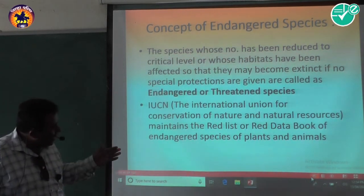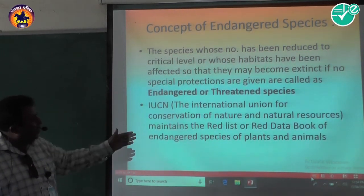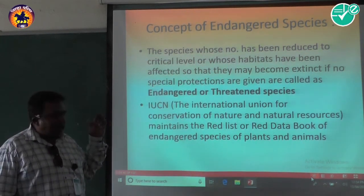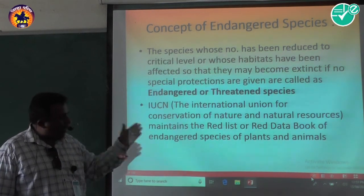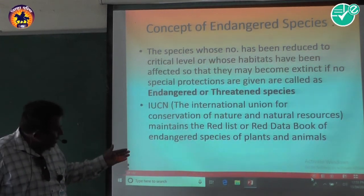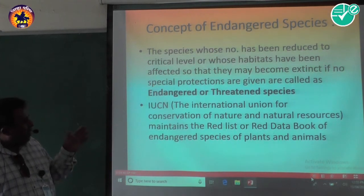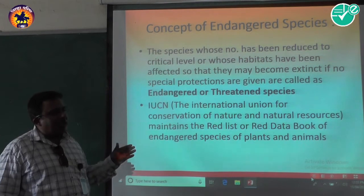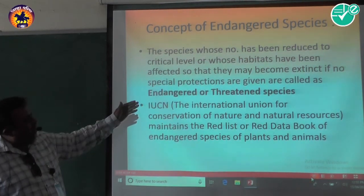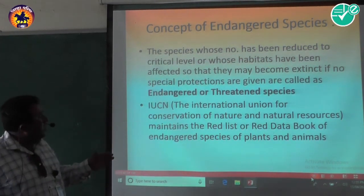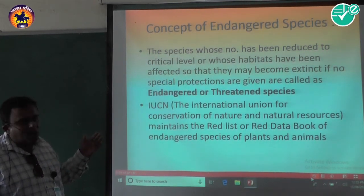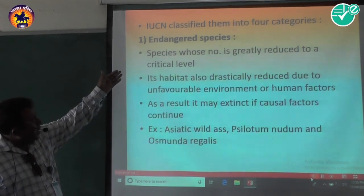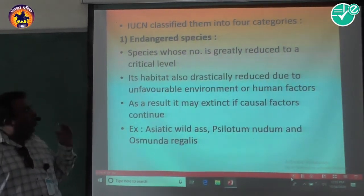IUCN — the International Union for the Conservation of Nature and Natural Resources — maintains a Red Data Book, also called the Red List, of endangered species of plants and animals. Plants and animals that are endangered or nearing extinction are entered into this book so that IUCN can take steps to control this. IUCN has classified them into four categories.